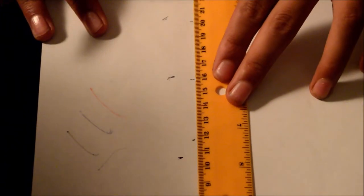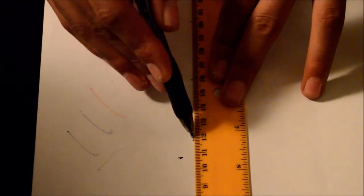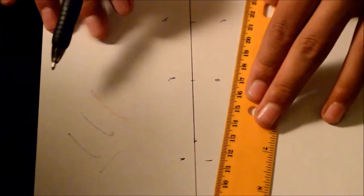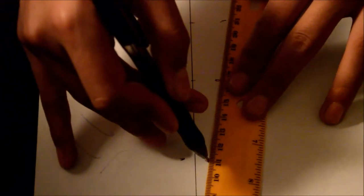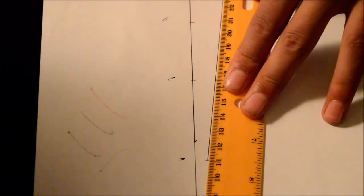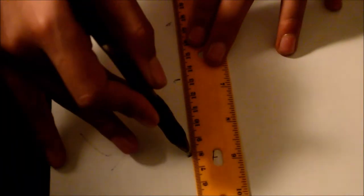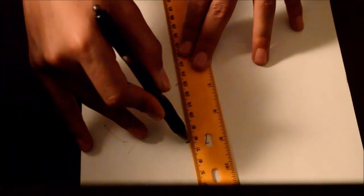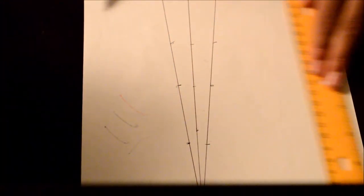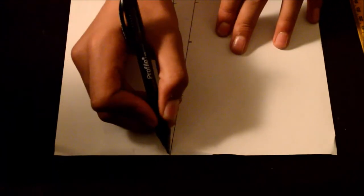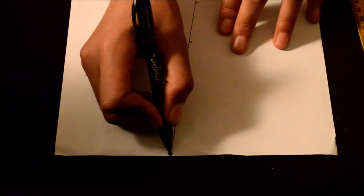Now, use your ruler to connect the three dots that you drew for each beam. You will notice that all of the lines connect at one central point, and that central point is called the focal point of the lens.